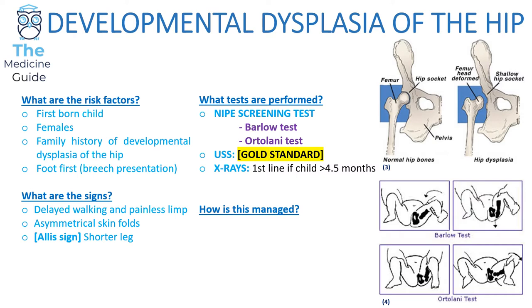Developmental dysplasia of the hip should be identified during the routine NIPE screening. When a child is born, they have that initial newborn screening examination. As part of the NIPE screening, the Barlow and Ortolani tests are performed. In the Barlow test, the healthcare professional tries to dislocate an articulated hip. The Ortolani test is then performed to try to relocate a dislocated hip, and the hip returns back into the acetabulum with a very loud, obvious clunk sound.